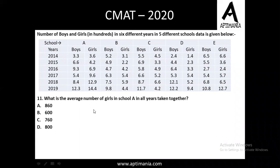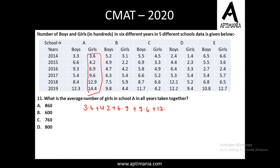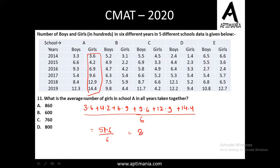Let's go ahead to the next question on the same data. Question number 11: what is the average number of girls in school A in all the years taken together? We add all the values: 3.6 + 4.2 + 6.9 + 9.6 + 12.9 + 14.4 = 51.6, divided by 6 gives 8.6. But since the data is in hundreds, we multiply by 100 to get 860. For question number 11, the correct answer is option A, that is 860.